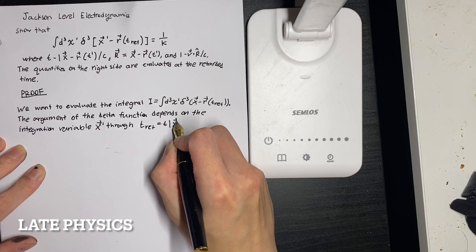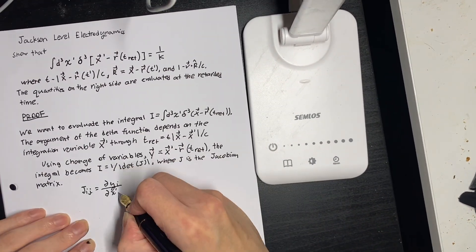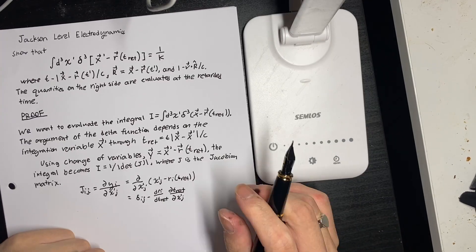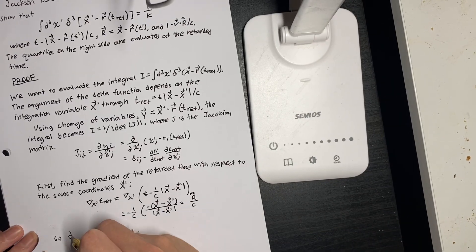I'm proving a mathematical identity when integrating a Dirac delta function over all space while accounting for the signal's travel time and a certain scaling factor.